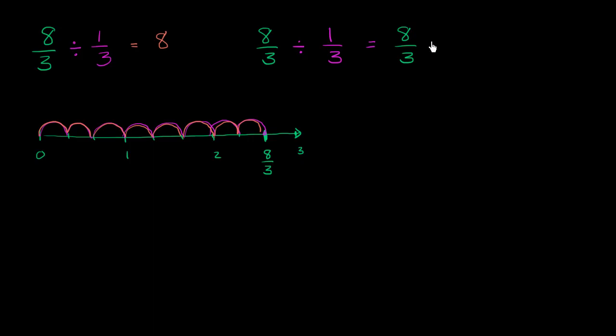And we could either write it like this. We could write times 3 like that. Or if we want to write 3 as a fraction, we know that 3 is the same thing as 3 over 1. And we already know how to multiply fractions. Multiply the numerators. 8 times 3. So you have 8. Let me do that same color. You have 8 times 3 in the numerator now. 8 times 3.